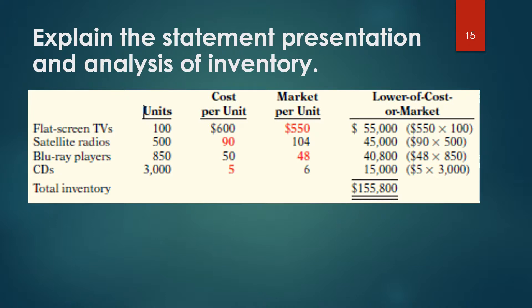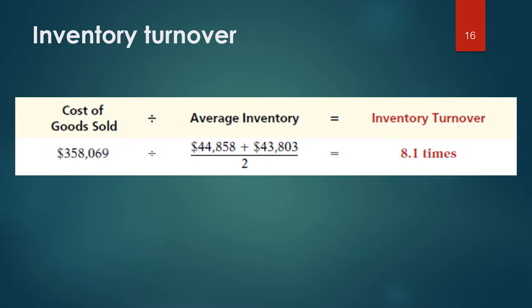Explaining statement presentation and analysis of inventory: companies apply the lower of cost or market (LCM) rule after using one of the cost methods — specific identification, FIFO, LIFO, or average cost. Under LCM, market is defined as current replacement cost, not selling price. For a merchandising company, current replacement cost is the cost of purchasing the same goods at the present time from usual suppliers in usual quantities. Inventory turnover measures the number of times on average the inventory is sold during the period, measuring the liquidity of inventory.